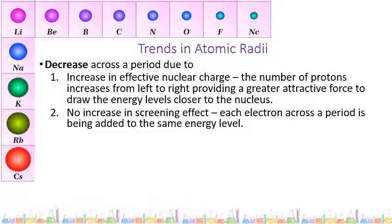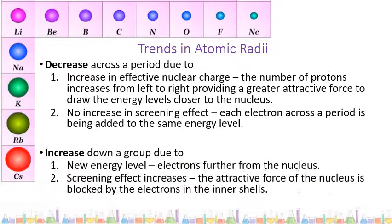If we look down the group, there is an increase in atomic radius. The reason for this is that each time we go down the group, there's a new energy level, so the electrons are further from the nucleus. There is also an increase in screening effect as we go down the group because there are more electrons in inner shells that are blocking the positive charge from the nucleus acting on the outer shell electrons.